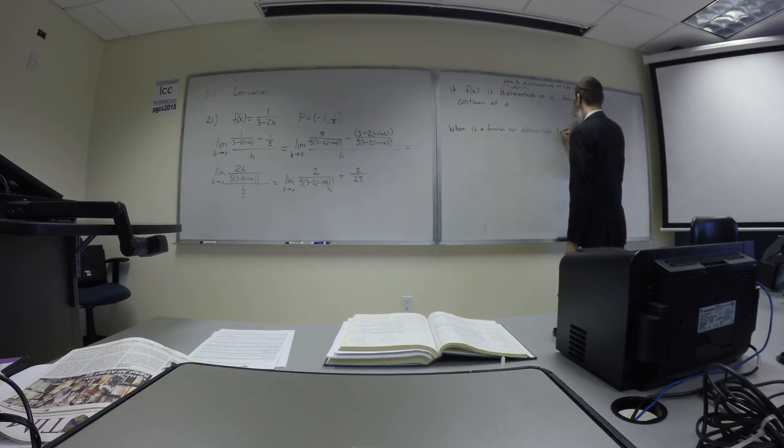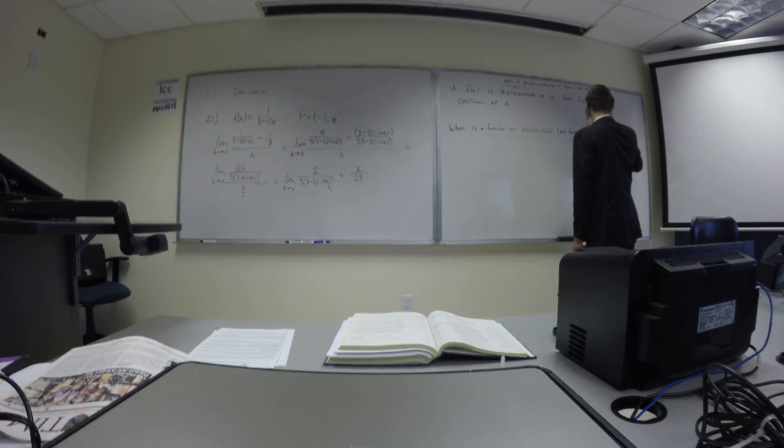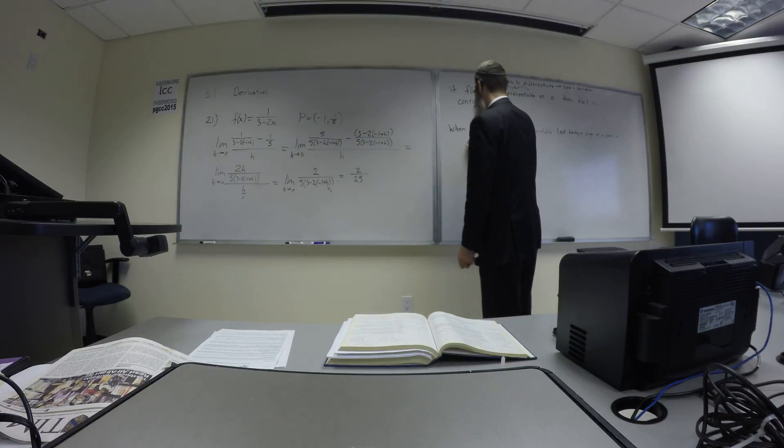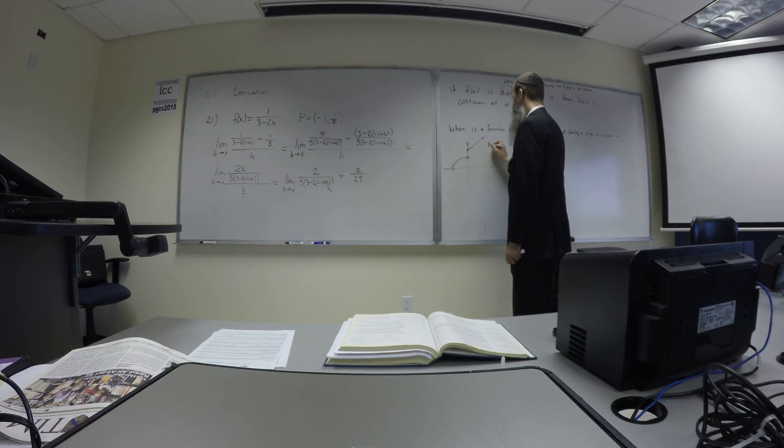When is a function not differentiable? That is not having a slope at a point a. Okay, so Cornelius said one, you said there's a hole. So it would be easy to draw a picture here. Call is a hole, and it starts over again and does something else. Good example.